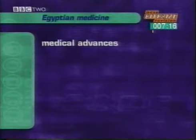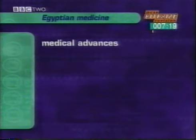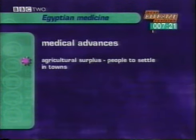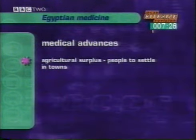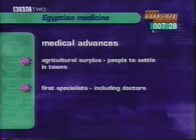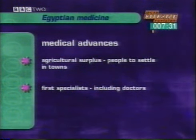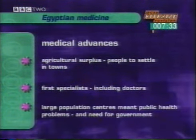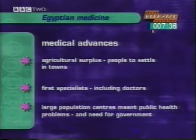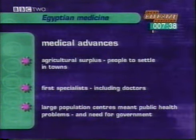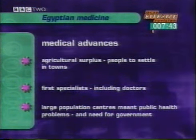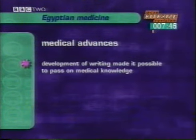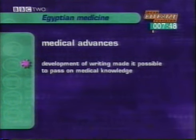A number of new factors in Egyptian civilization made medical advances possible. The fertility of the Nile Valley meant not everyone needed to till the soil. An agricultural surplus meant people were free to settle in towns, leading to the creation of the first specialists — craftspeople, priests and doctors. Larger numbers living close together brought public health and hygiene problems and the need for strong government, the all-powerful pharaohs. Finally, the development of writing made it possible to record and pass on medical knowledge.